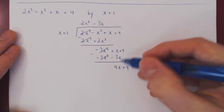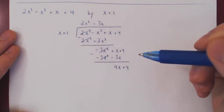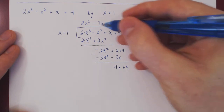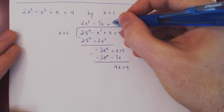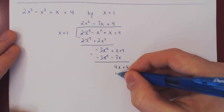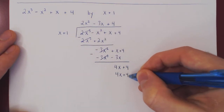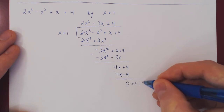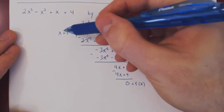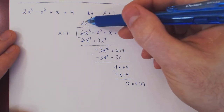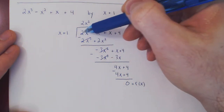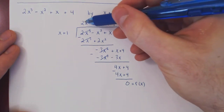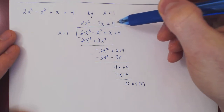The degree here is 1 and the degree of the divisor is also 1, so we have to repeat. What times x is 4x? Plus 4. 4 times x plus 1 gives 4x plus 4. We subtract and now we have 0 — our remainder. This implies that x plus 1 divides 2x cubed minus x squared plus x plus 4, and the other factor is 2x squared minus 3x plus 4.